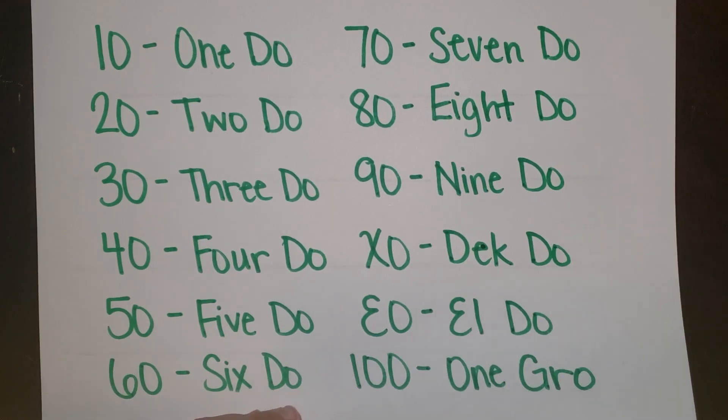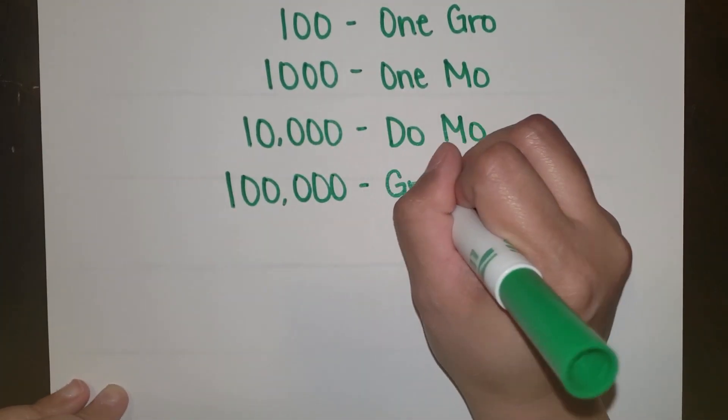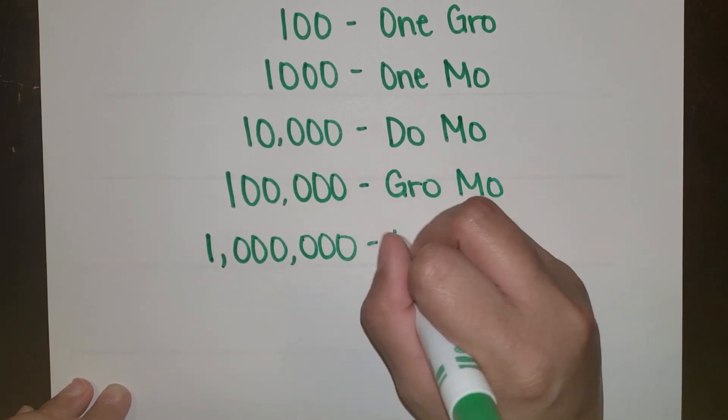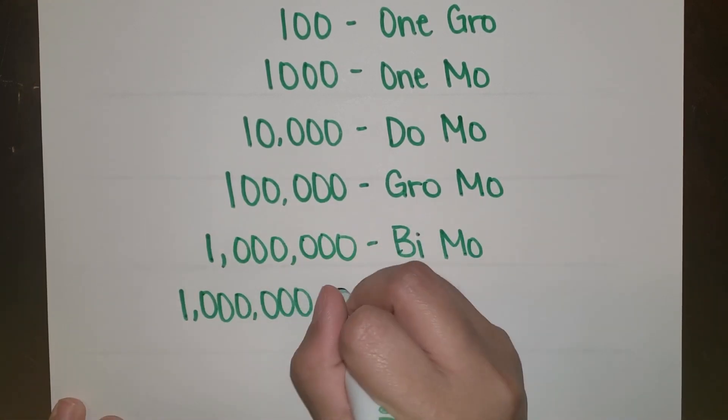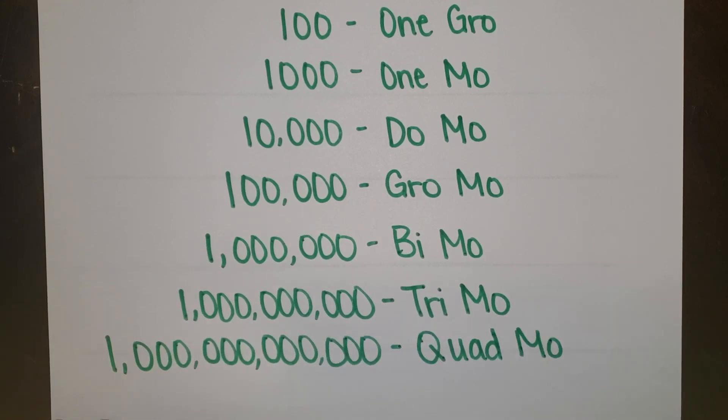Moving to bigger numbers, after 1 GROW is 1 MOE, then you have DOE MOE, GROW MOE. 1 MOE times itself is a BI MOE, then a TRY MOE, then a QUAD MOE. And the number system continues this way.